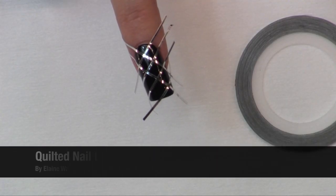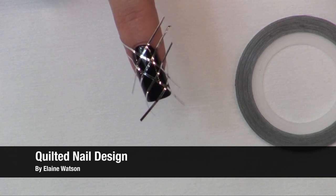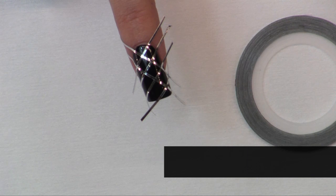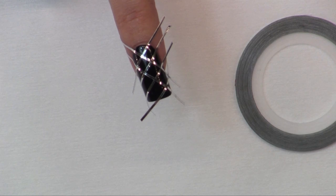This next design is another quick and easy one. You want to make sure your background color is completely dry before you apply this striping tape as a masking technique so that you don't hurt your design or the nail actually when you're pulling off the tape.